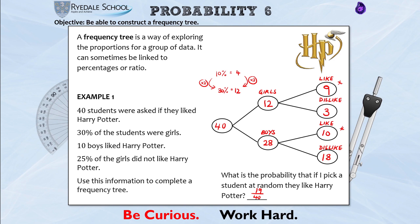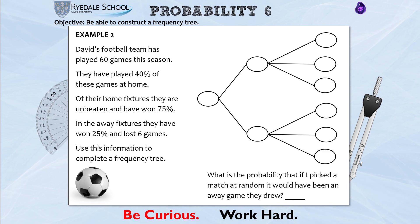Let's look at a second example. This frequency tree looks slightly different — there are a couple of branches that then split into three, which will make more sense when we read the question. Example 2: David's football team has played 60 games this season. They have played 40% of these games at home. Of their home fixtures they are unbeaten and have won 75%. In the away fixtures they have won 25% and lost 6 games. Use this information to complete a frequency tree.